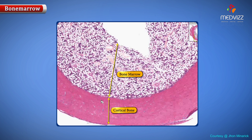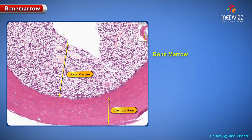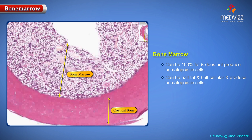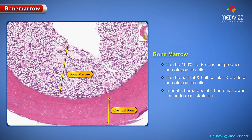In addition, bone has marrow. Bone marrow can be 100% fat, in which case it will not make hematopoietic cells. Or bone marrow can be approximately half fat, like you see here, and half cellular, which is the normal general ratio for hematopoietic bone marrow. In adults, hematopoietic bone marrow is primarily limited to the axial skeleton, and the appendicular skeleton, the distal extremities, is primarily non-hematopoietic marrow, or 100% fat.